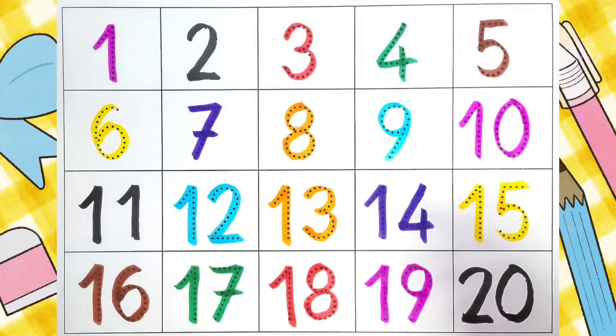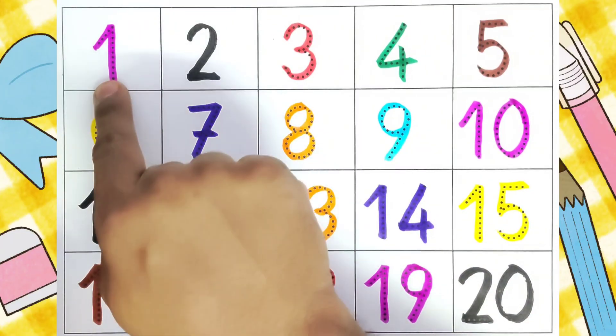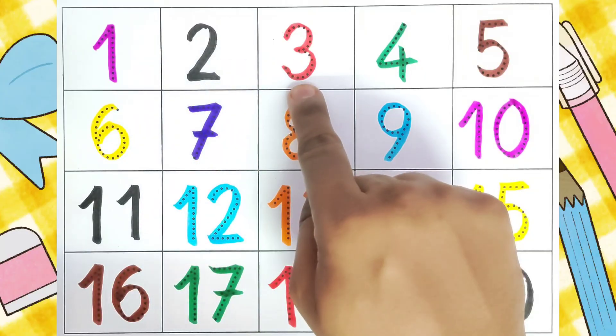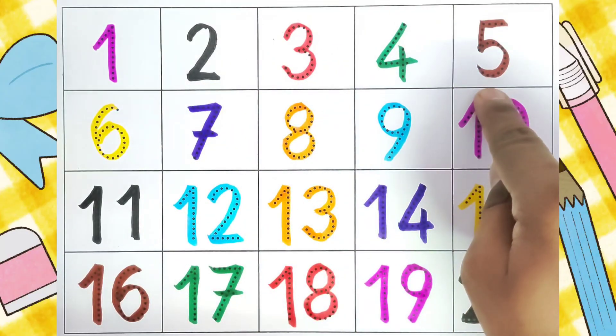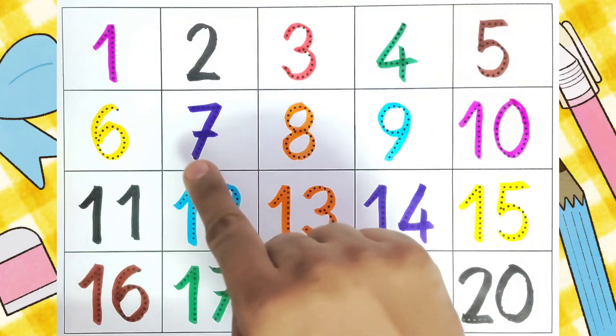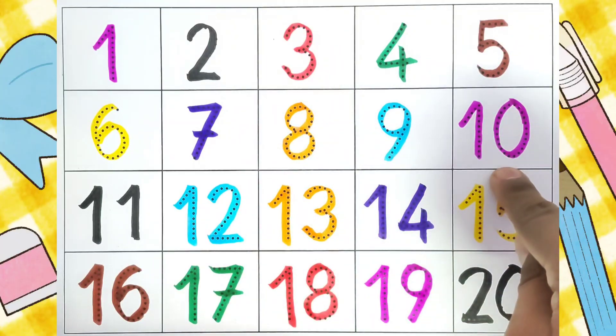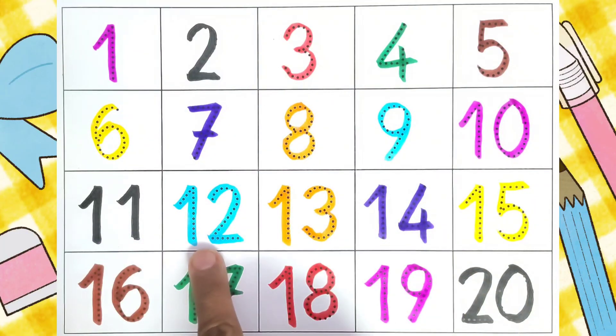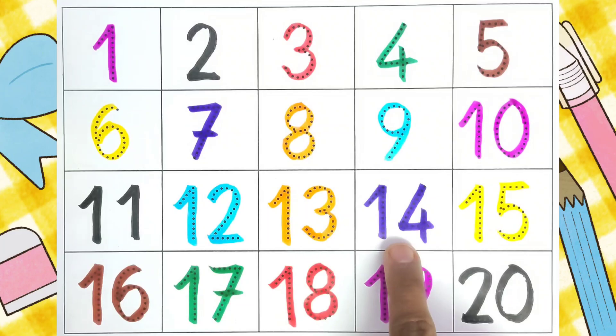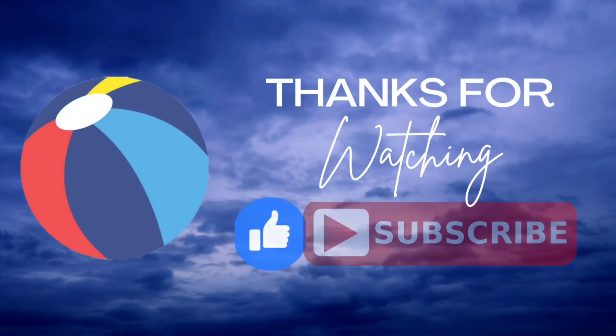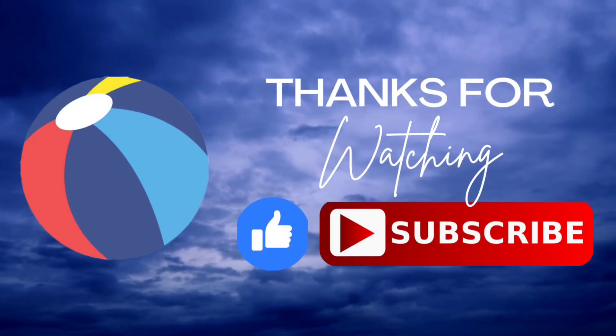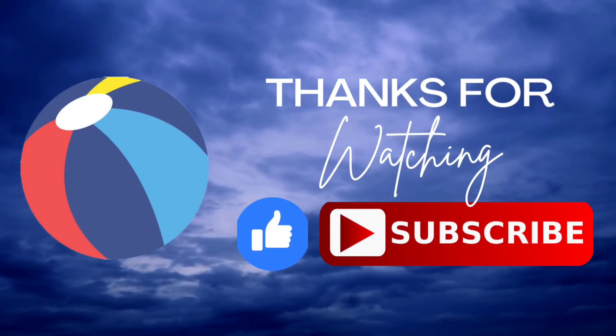Now we will read one by one: 1, 2, 3, 4, 5, 6, 7, 8, 9, 10, 11, 12, 13, 14, 15, 16, 17, 18, 19, 20. Thank you kids for watching this. Do like and subscribe to this channel. Thank you. Bye bye.